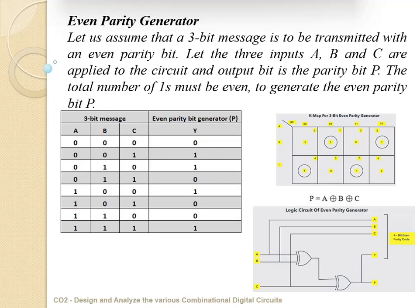Let us start with A, B, C. The first condition is A=0, B=0, C=0. If the parity bit is 1, the number of ones in the four-bit data will become odd, which means it is odd parity. So we need to make the parity bit 0 such that the message includes all zeros. Next, for input 0, 0, 1: we have one 1, and making the parity bit also 1 gives a total of two 1s in the transmitted data, which is even parity. Proceeding further, if the input is 1, 1, 1 — three ones — along with even parity bit 1, it becomes four ones, which is an even number, confirming the number of ones in the transmitted data is even.